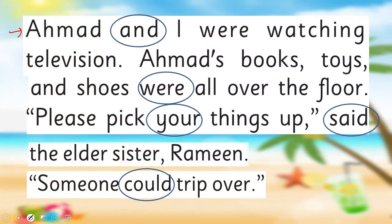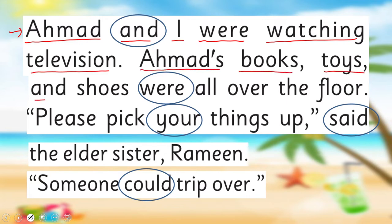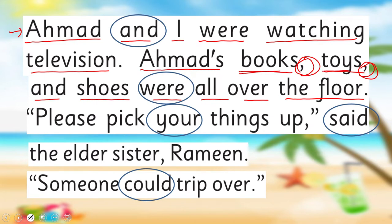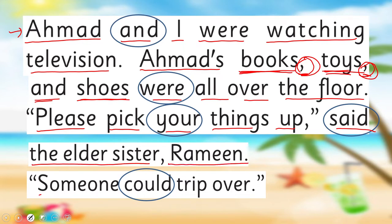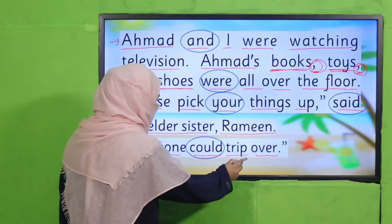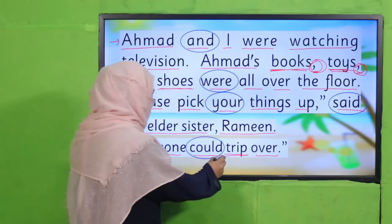Let's start reading. 'Ahmad and I were watching television, and Ahmad's books, toys, and shoes were all over the floor.' Pause here and notice the use of the comma — I taught you about this. There is a list of things: books comma, toys comma, and shoes. This is how we use a comma in a sentence. Next: 'Please pick your things up,' said the elder sister Rameen. 'Someone could trip over.' Trip means to abruptly fall on something.